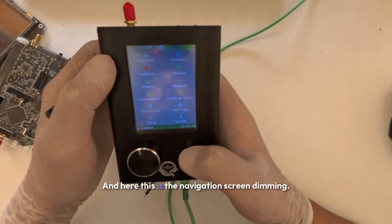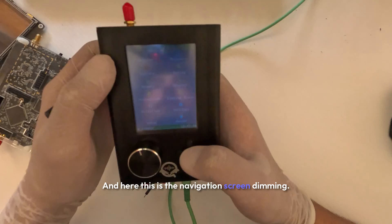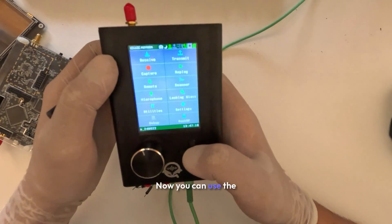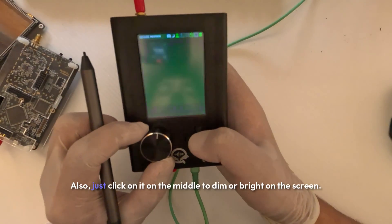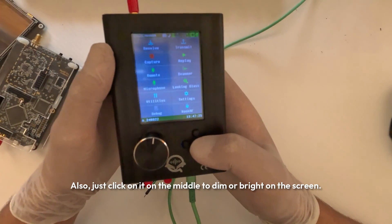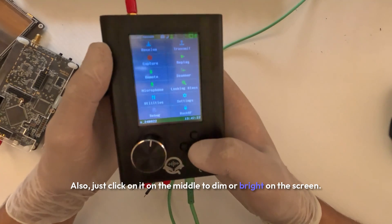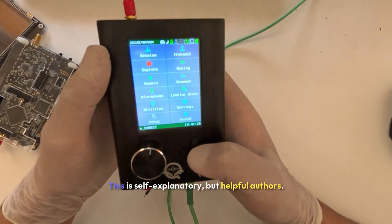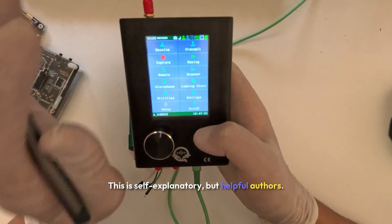And here this is the navigation screen dimming. You can also just click on it in the middle to dim or brighten the screen. This is self-explanatory but helpful for outdoor use.